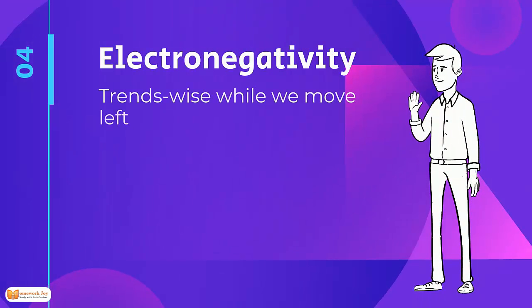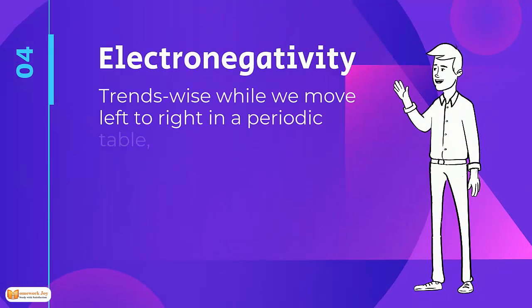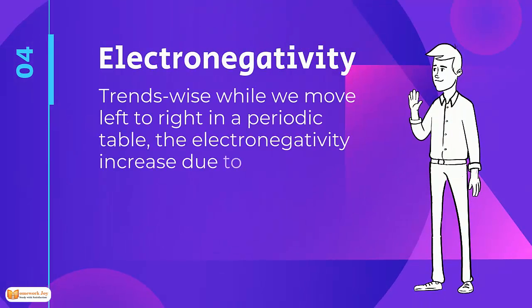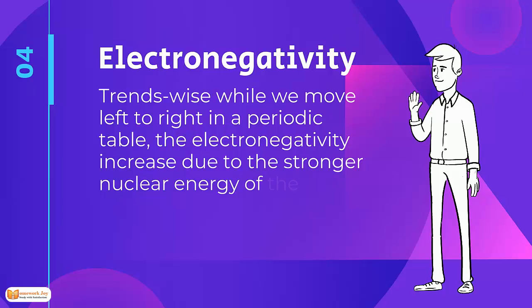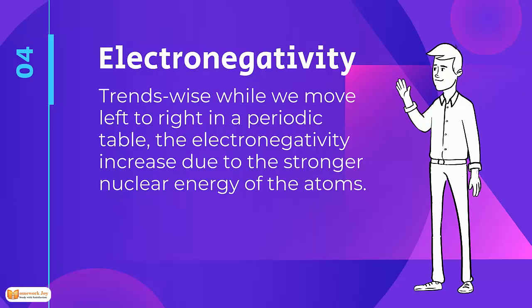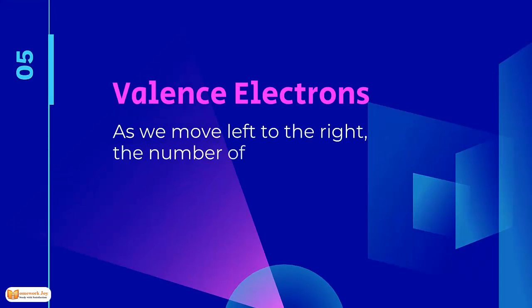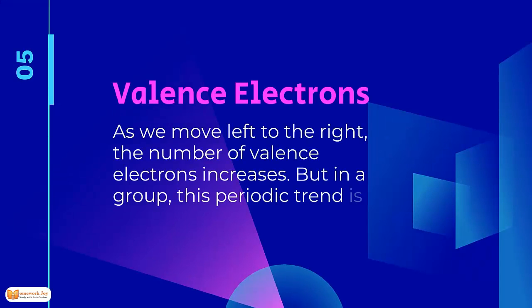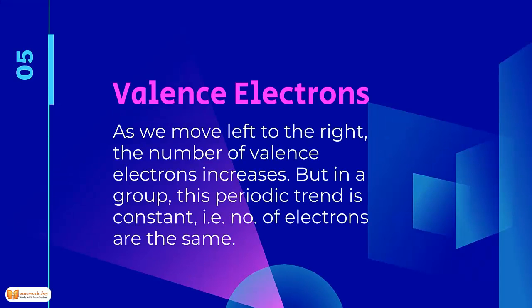Electronegativity trend: as we move across the periodic table, electronegativity increases due to the stronger nuclear attraction on the atoms' valence electrons. Moving left to right, the number of valence electrons increases, but within a group this trend is constant — the number of valence electrons remains the same.